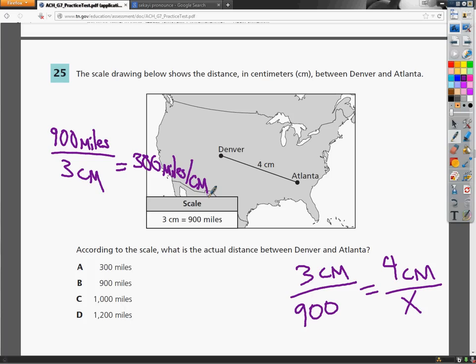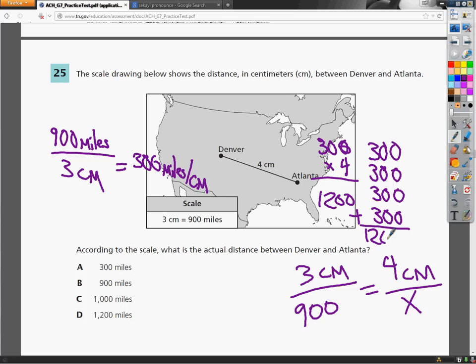So all I need to do now is take 300 miles and 4 centimeters. So I could do 300, 300, 300, 300. Or I could just save all the effort and do 300 times 4. Either way. So it gives me 1200 miles.